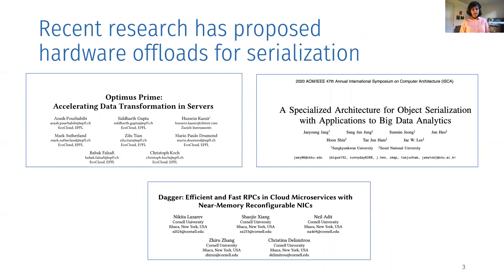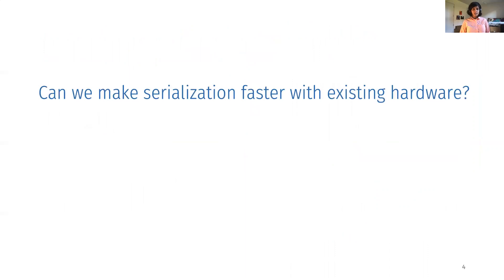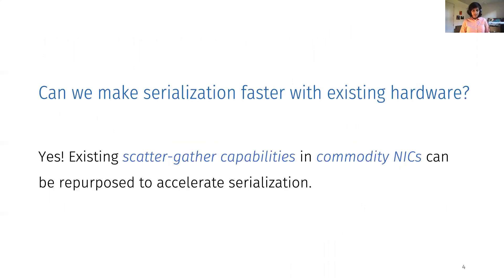Recent research has proposed hardware offloads for serialization to fix this problem from FPGAs or smart NICs. In this work, we ask: can we make serialization faster with existing hardware? And the answer is yes. Existing scatter-gather capabilities in commodity NICs can be repurposed to accelerate serialization. In the rest of this talk, I will go over performance gaps in existing serialization stacks, our proposed approach and why scatter-gather is a good fit, and technical open research challenges that arise with our approach.